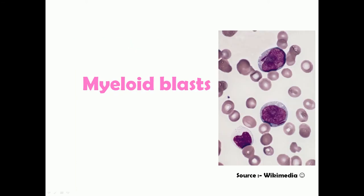There are also myeloid blasts in the bone marrow, which are characteristic cells seen in acute myeloid leukemia. Myeloid blasts are identified by a specific rod-like structure known as Auer rods — spelled A-U-E-R — which are present in the cytoplasm of myeloid blasts near the nucleus. These are the characteristic feature of AML and are also present in MDS, but in smaller amounts compared to acute myeloid leukemia.